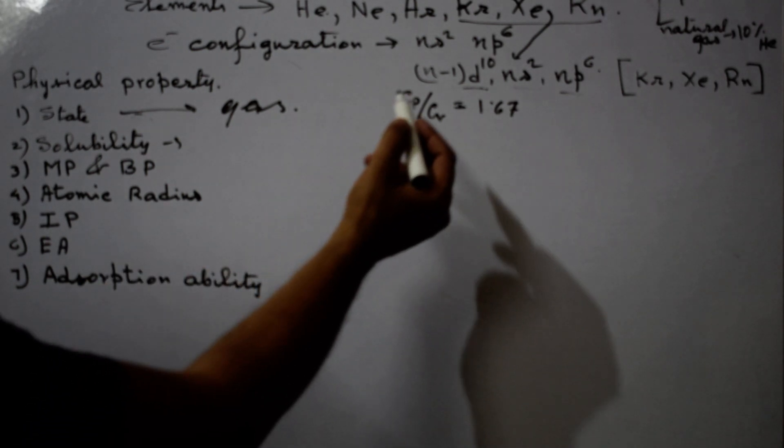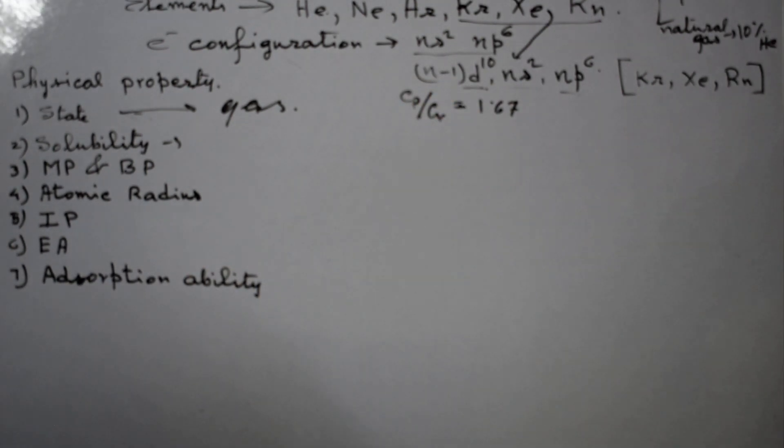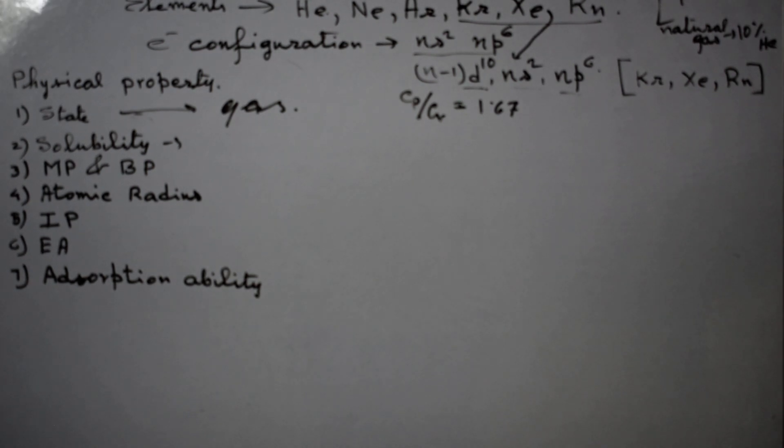So they cannot react. They cannot form any covalent or electrovalent bond with others because there is no vacant orbital, there are no extra unpaired electrons. In case of krypton, xenon, and radon, these three gases have electronic configuration n-1 d10 ns2 and np6.